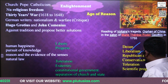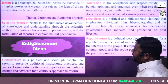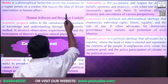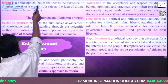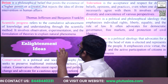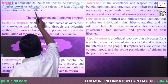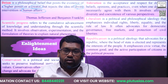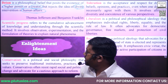The main themes of enlightenment include deism, liberalism, republicanism, conservatism, toleration, and scientific progress. Deism is the philosophy that acknowledges the existence of a higher power or creator but rejects the idea of divine intervention in human affairs. If God cannot interfere in human affairs, then the church has no justification to interfere either — this challenged church power.